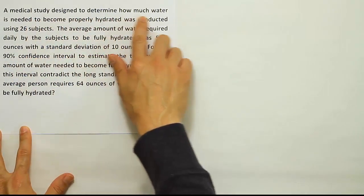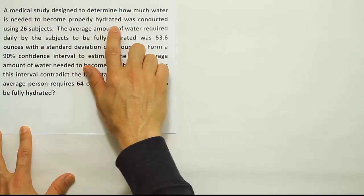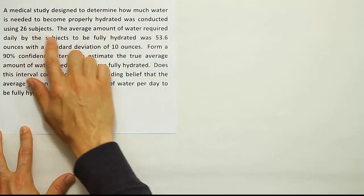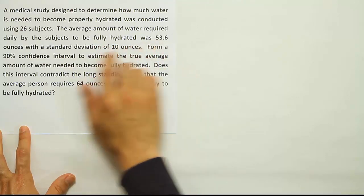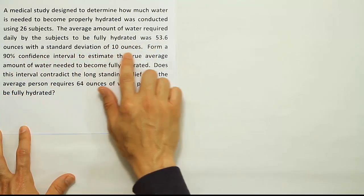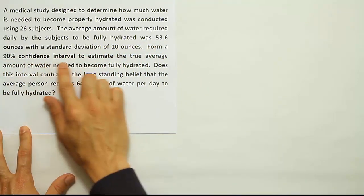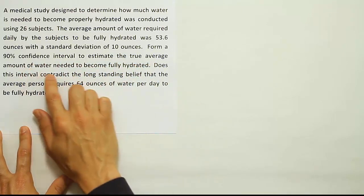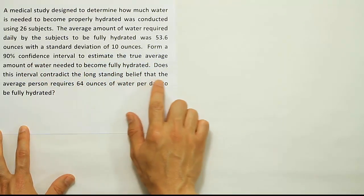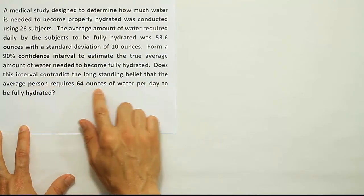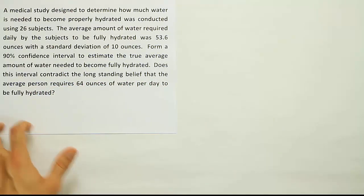A medical study designed to determine how much water is needed to become properly hydrated was conducted using 26 subjects. The average amount of water required daily by the subjects to be fully hydrated was 53.6 ounces with a standard deviation of 10 ounces. Form a 90% confidence interval to estimate the true average amount of water needed to become fully hydrated. Does this interval contradict the long-standing belief that the average person requires 64 ounces of water per day to be fully hydrated?